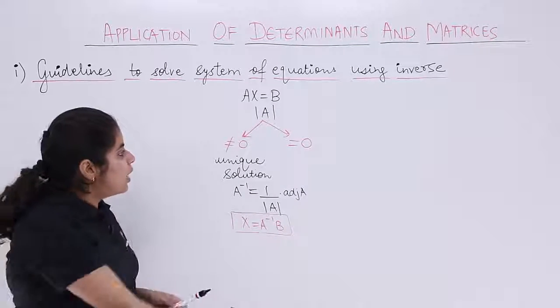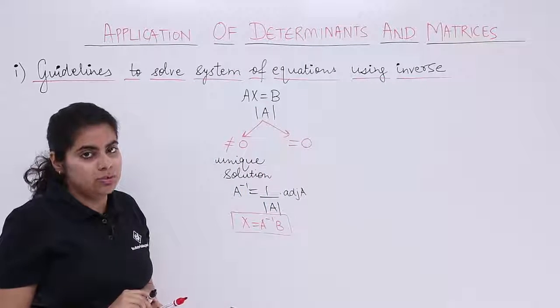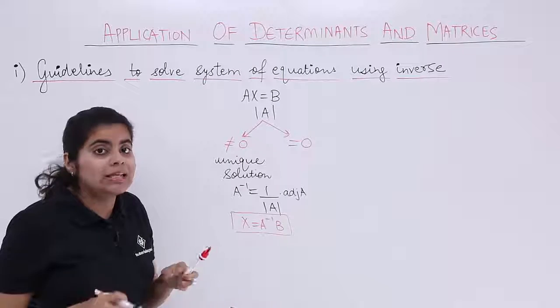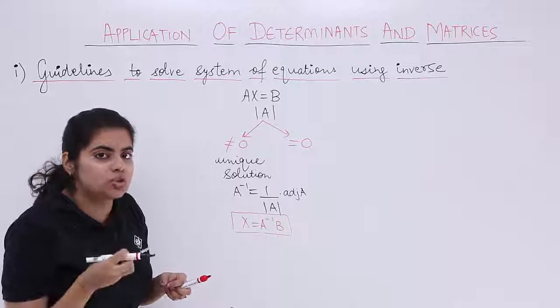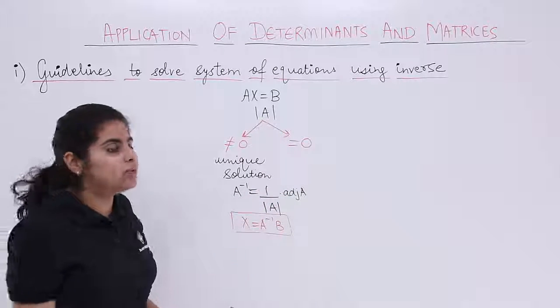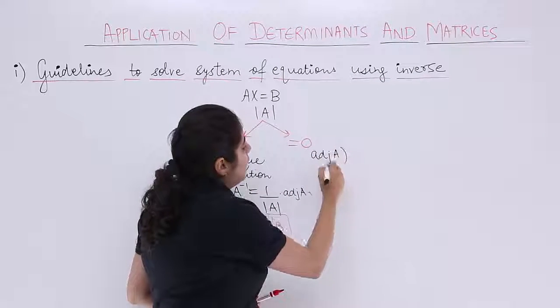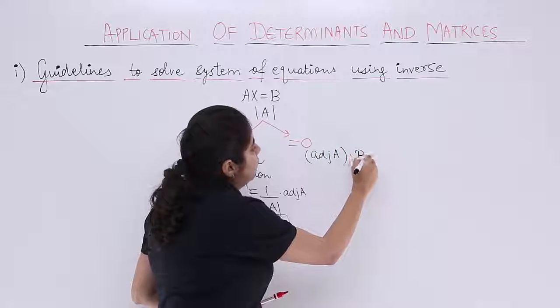Now what if the determinant value is equal to 0? If the determinant value is equal to 0, you need not worry. There is still hope of a solution or more than one solution or no solution. Let's see. If it is equal to 0, your task is to find adjoint A multiplied by B.